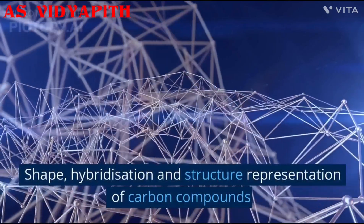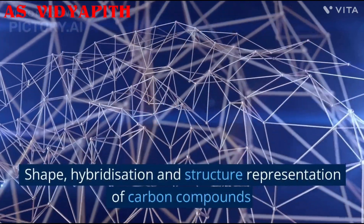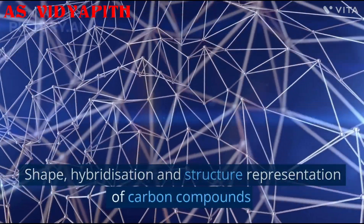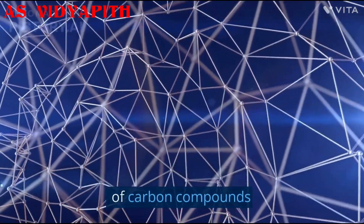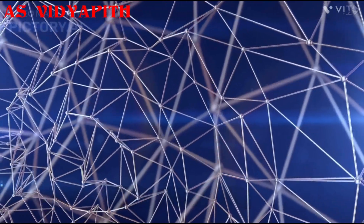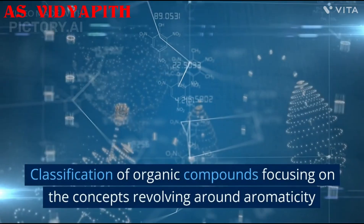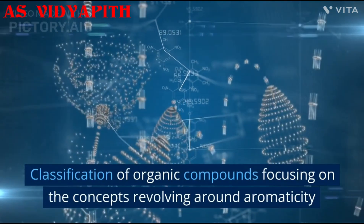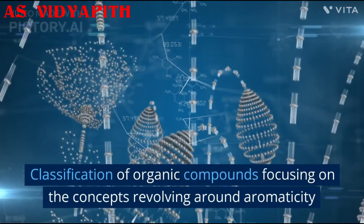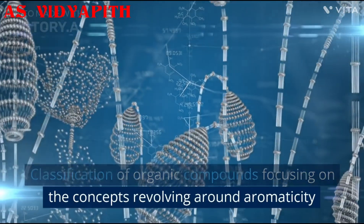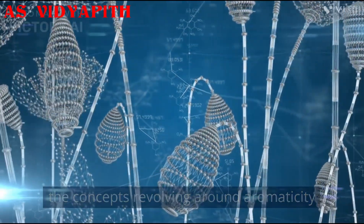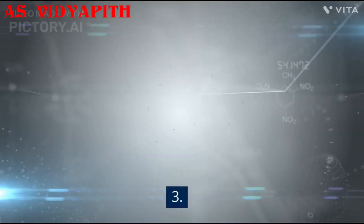Chapter 12: Organic Chemistry — Some Basic Principles and Techniques. Important Topics: 1. Shape, Hybridization and Structure Representation of Carbon Compounds. 2. Classification of Organic Compounds, focusing on concepts revolving around Aromaticity.